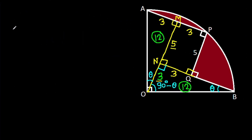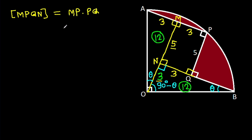Now, area of rectangle MPQN equals MP times PQ, which is 3 times 5, that is 15. So this area is 15.